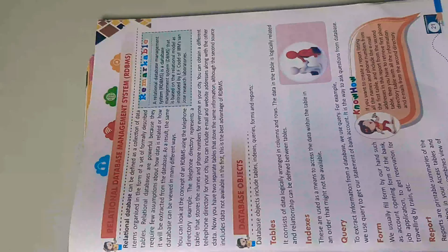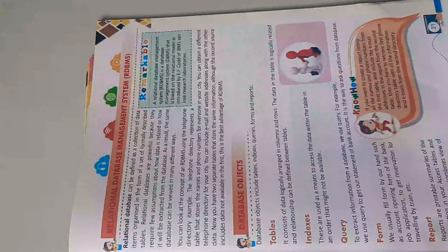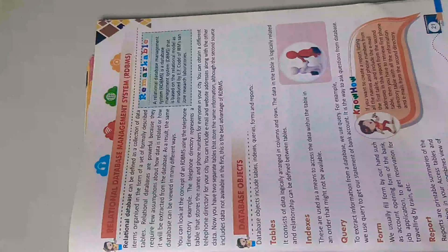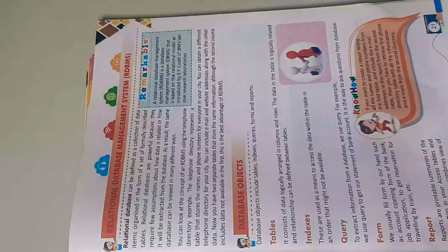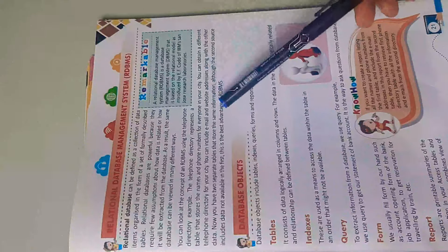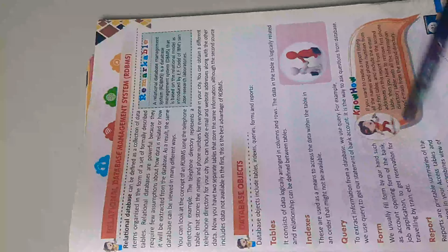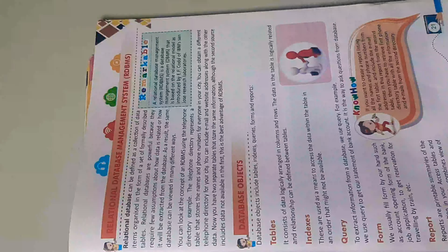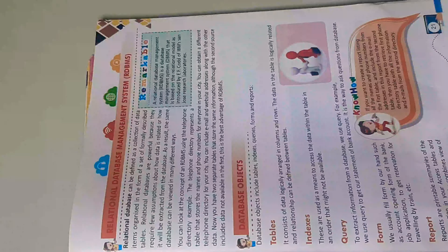You can understand RDBMS using the telephone directory example. A telephone directory represents a table that stores the name and phone number for everyone in your city. You can also create a different telephone directory for your city that includes email addresses, website addresses, and home addresses stored in table format.